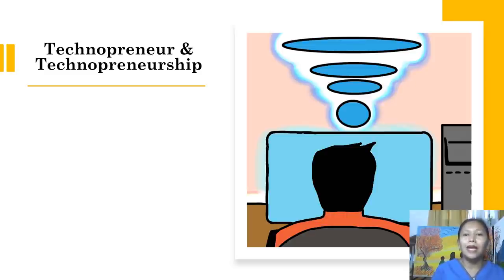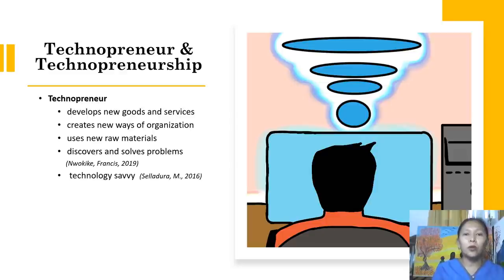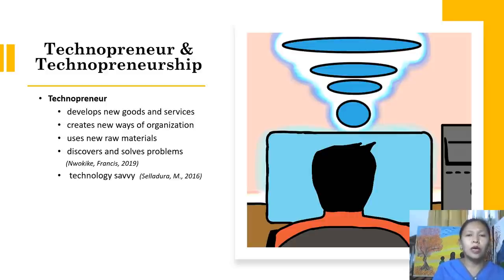Because of the complexity of specialized skills and technologies, new forms of entrepreneurs are developing. We have the technopreneur. So what is a technopreneur? These are persons who are destroying the existing economic order by introducing new products and services, creating new forms of organization, and exploiting new materials.